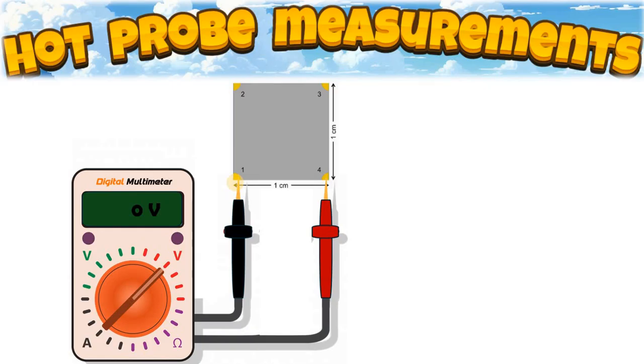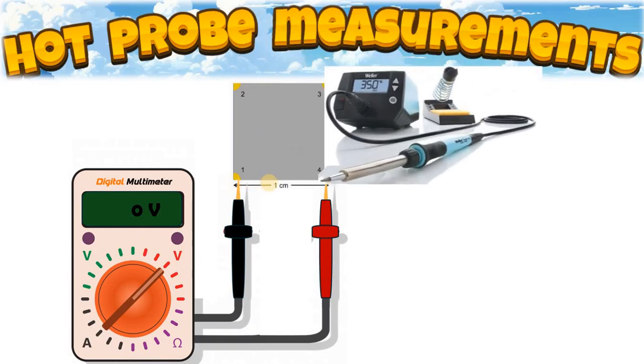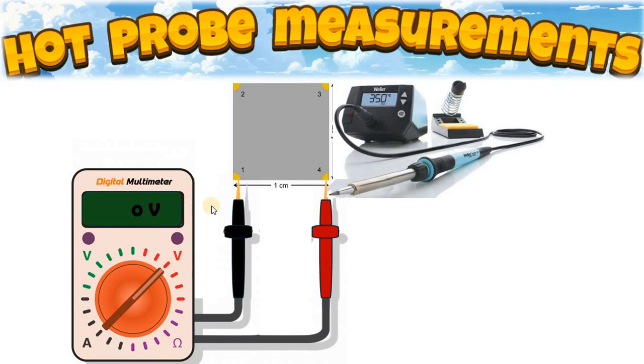Now for the measurement, we heat one side of the multimeter, one probe of the multimeter, which is the positive probe using a heat source. And in this case, the heat source is a solder station.